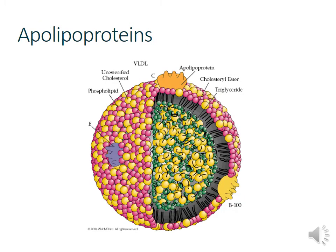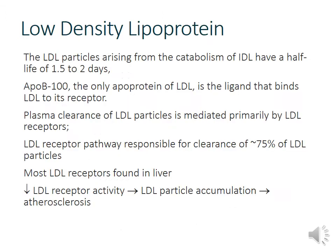Apolipoproteins interact with LDL receptors and are important components for processing these molecules through the liver. Mutations in apolipoproteins can cause significant alterations in cholesterol content. The LDL receptor processes about 75% of LDL in the bloodstream. If we have more LDL receptors, we can process more LDL and reduce atherogenesis. However, if too much activates those receptors, they eventually down-regulate, less LDL is processed, and atherosclerosis can develop. So we want more LDL receptors and more hepatic processing of LDL.